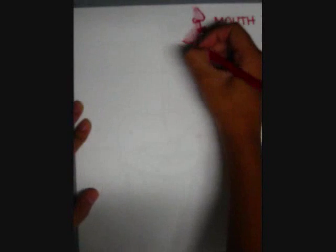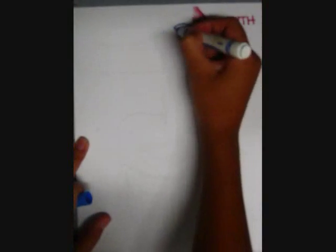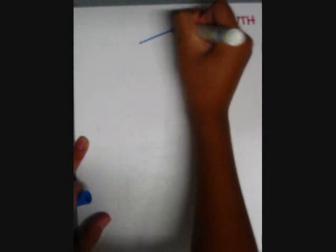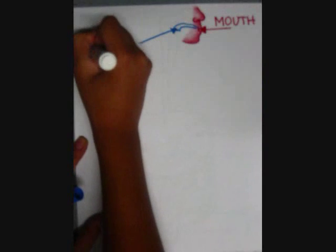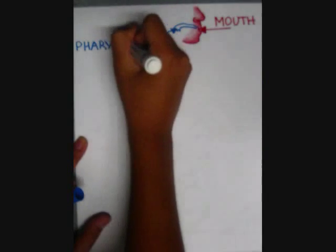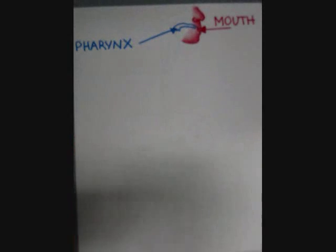The GI tract starts at the mouth. In the mouth is where food is received and digestion begins by mechanically breaking up solid food particles into smaller pieces and mixing them with saliva.